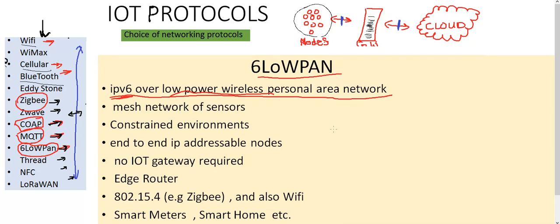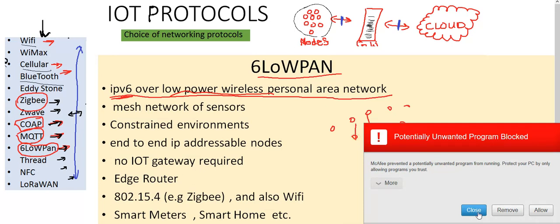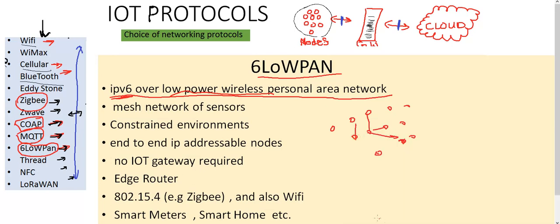In 6LoWPAN, you have all the nodes which are end-to-end with each other. Each node has an IPv6 address and they can directly talk to each other using this standard IPv6 addressing. Because each of these nodes has an IPv6 address, they can directly communicate with the internet.